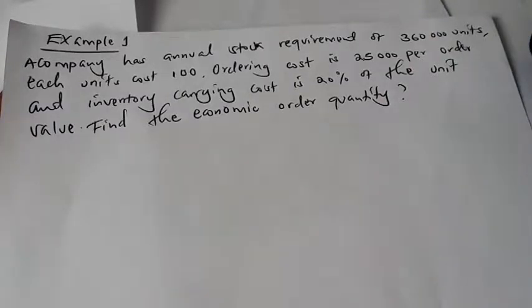So we have our example number one, which goes like: a company has annual stock requirements of 360,000 units. Each unit costs 100, ordering cost is 25,000 per order, and the inventory carrying cost is 20% of the unit's value. So find the economic order quantity.